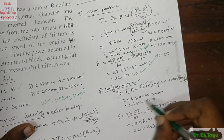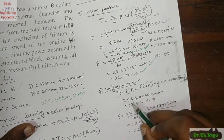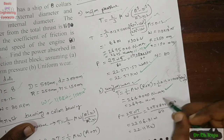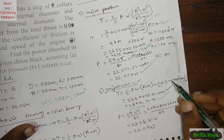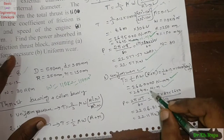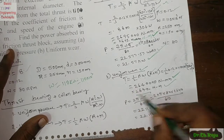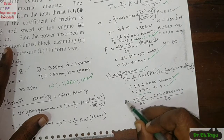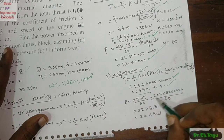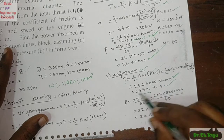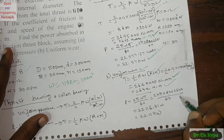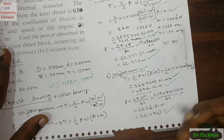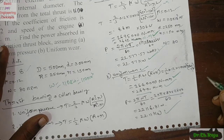After calculating T in N·mm and converting to N·m, T = 2640 N·m. Substituting into P = 2πNT/60 with N = 80 rpm gives P = 22,116.81 W, which is approximately 22.1 kW.